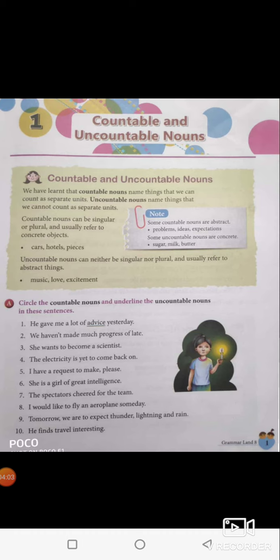Fifth one: I have a request to make. Request is here considered as singular — I have a single request, I have one request. So request here is considered as countable, and the request can be circled.